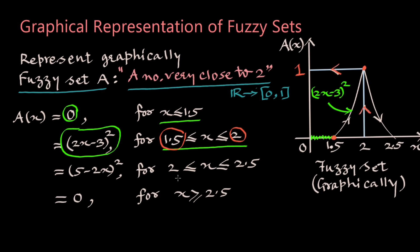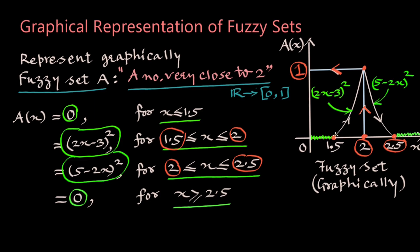When x is between 2 and 2.5, the grade value is again defined by a quadratic function (5 minus 2x) whole square which again is a parabola represented by this curve. When x is equal to 2 the grade value is as usual 1 here and when x is 2.5 the grade value is 0 again. When x is greater than or equal to 2.5, membership grade is 0 which does not belong to the fuzzy set and is outside the fuzzy set here. And now the graphical representation of the fuzzy set is this only.